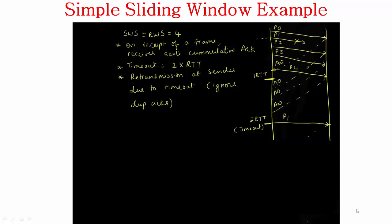So here are some examples at last. In this I'm considering a very simple sliding window example where I'm going to make use of cumulative acknowledgements at the receiver. I'm going to set the timeout value equal to twice the round trip time, and at the sender the retransmission is mainly due to timeout. In other words, it's going to ignore the duplicate ACKs. So these are the assumptions I'm making as part of the sliding window protocol. Now let's see what happens.